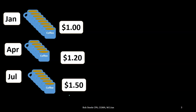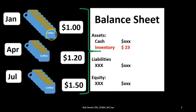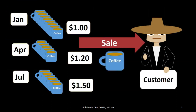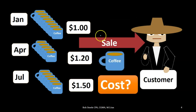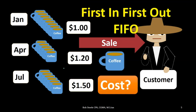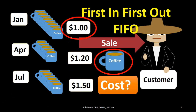A customer asks for a coffee mug — our first sale. We'll sell them all for $5.00. The issue is: what is the cost of that coffee mug? Is it $1.00, $1.20, or $1.50? Under first in first out, we assume the coffee mug was taken from the first batch, so the cost is $1.00. This is the most intuitive method because it follows the normal flow of inventory — we'd try to sell the oldest inventory first. But it's important to note this is just an assumption.